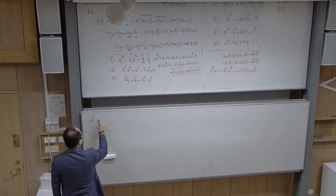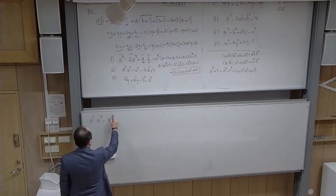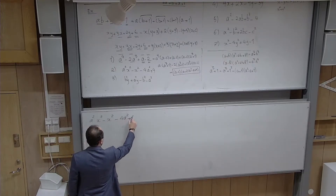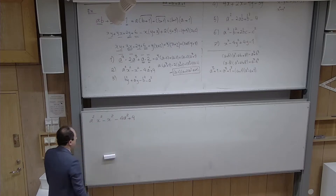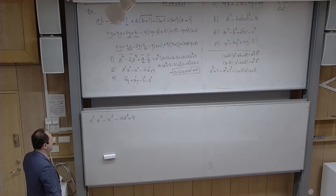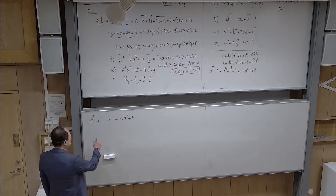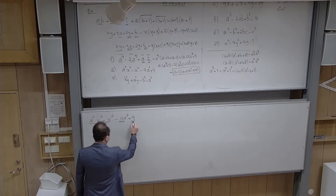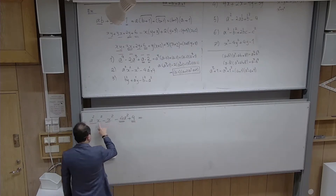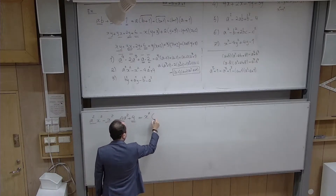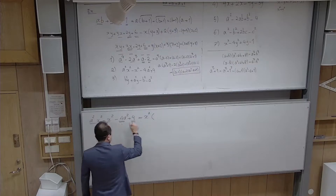Applying the conjugate rule to a² − (b − c)²: this becomes (a − (b − c))(a + (b − c)). Removing unnecessary brackets: (a − b + c)(a + b − c). It is always better to remove unnecessary brackets in mathematics, so multiply the minus sign through in the first factor.